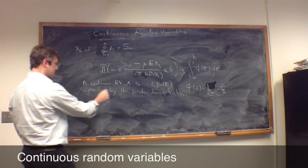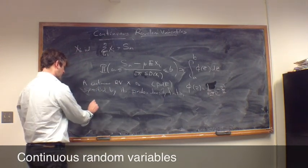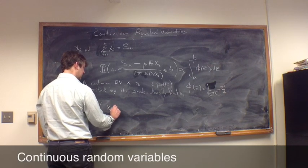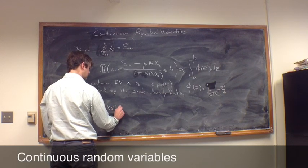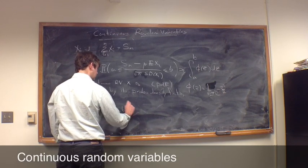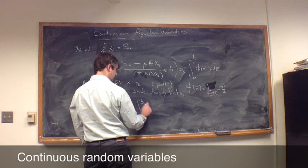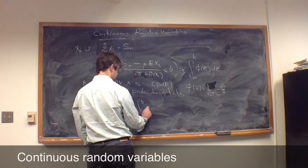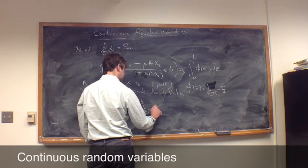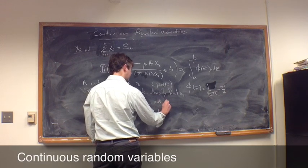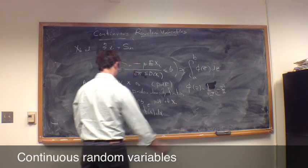And the idea is that if x is one of these continuous random variables, then the probability that x is in some interval, let's say ab, is just the integral from a to b of the probability density function. Let's just call it f of x dx, where this is the pdf of x.